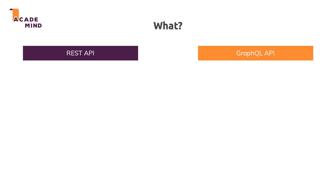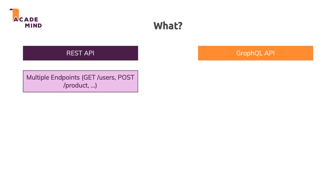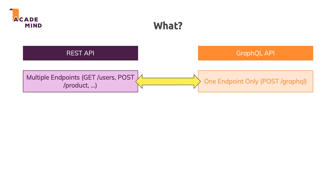A REST API embraces the concept of having multiple endpoints — multiple URLs exposed by your web service, to be precise paths on the domain where you host it — that react to different HTTP methods or verbs. A GraphQL API, on the other hand, works with one endpoint only, which is always reached with a POST request, often at your domain.com/graphql. That's one crucial difference: multiple endpoints versus one endpoint.